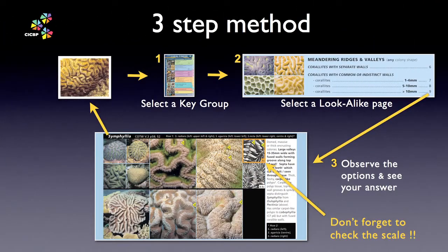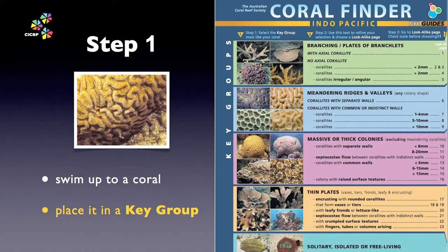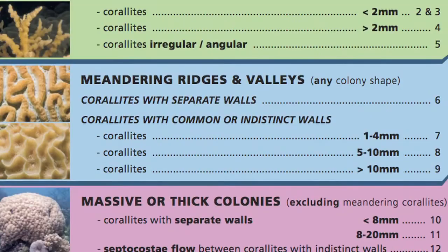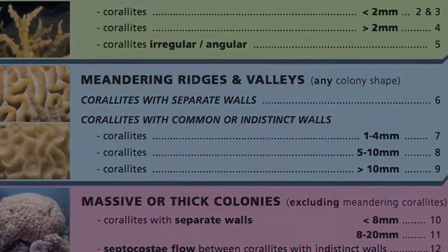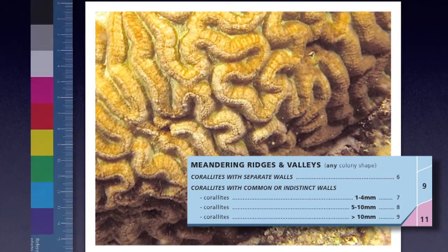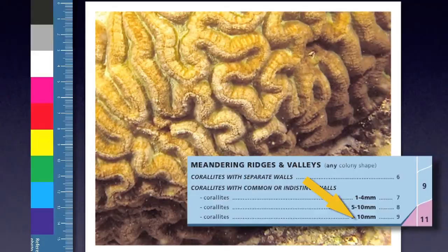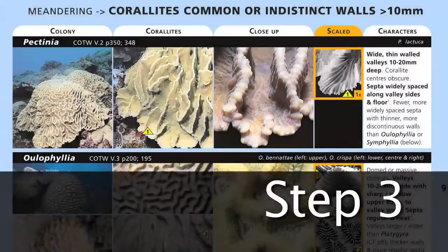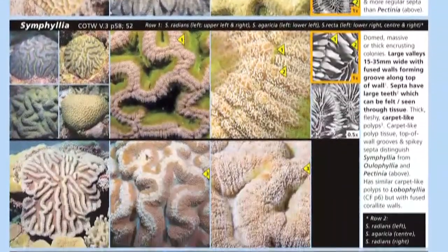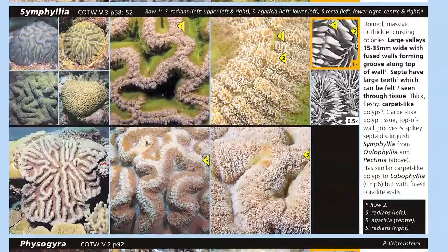Let's review the Coral Finder's three-step ID process. Step one: choose a key group. Clearly there is a meandering texture on the colony surface, so let's give that a try. Step two: choose a look-alike page. The walls are common and, using the scale bar on the Coral Finder's inside back page, we know that the valleys are greater than 10 millimeters in diameter. Finally, scan the look-alike page comparing and contrasting the options. Some Symphyllia looks good.